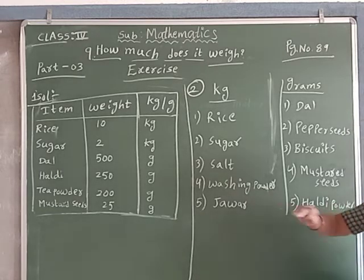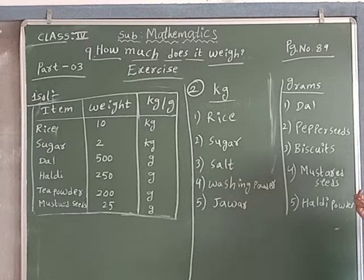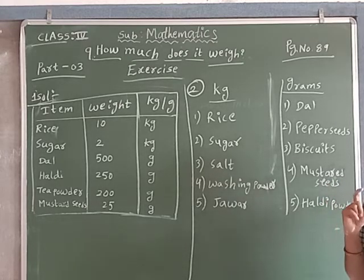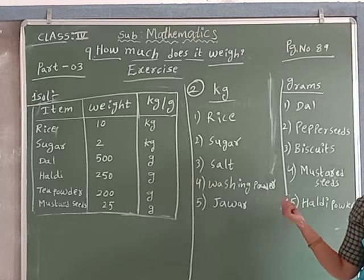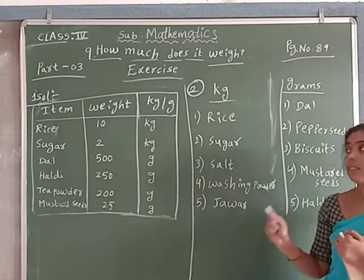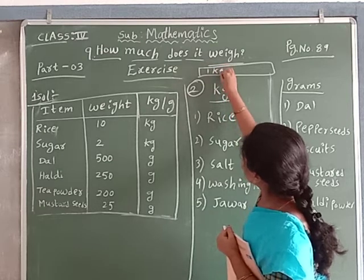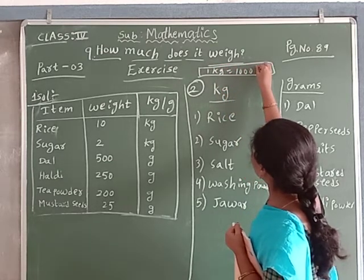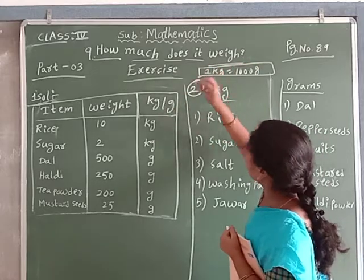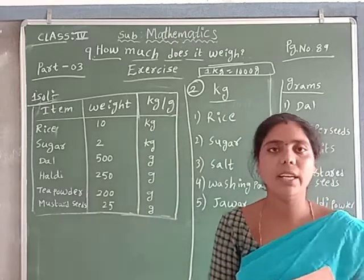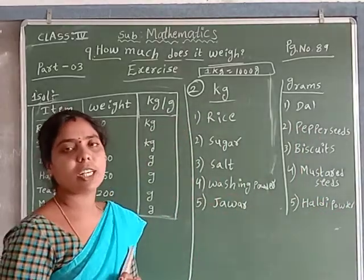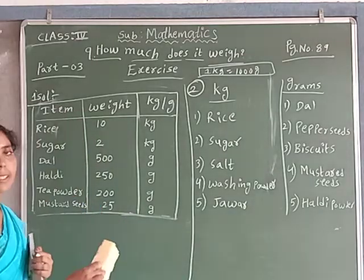See children, here — kilograms and grams. Whatever items we take, how much quantity will we take? Small quantities we measure in grams, more quantity we measure in kilograms. Remember: 1 kg equals 1000 grams. You remember that, okay? Now complete this, children. Completed? Okay, now third question.